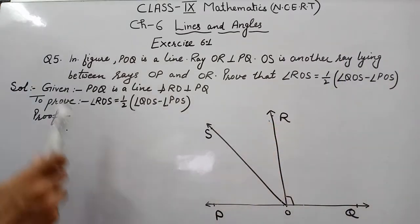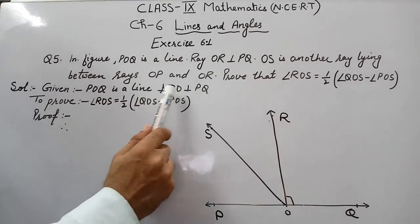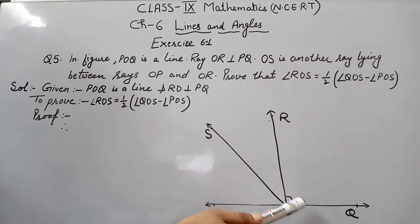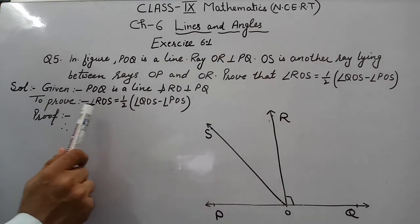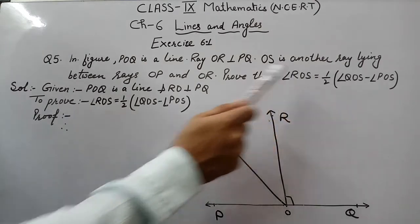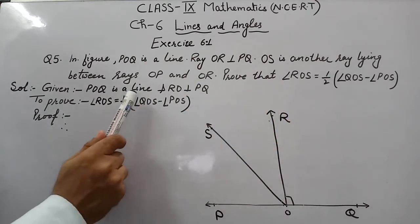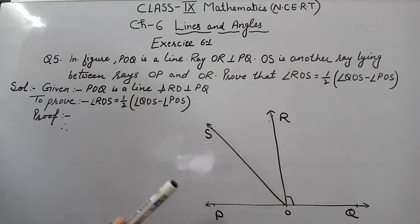So let's start this. In given, we will write POQ is a straight line and RO perpendicular to PQ. And to prove: angle ROS is equal to half of angle QOS minus angle POS. So let's start here.